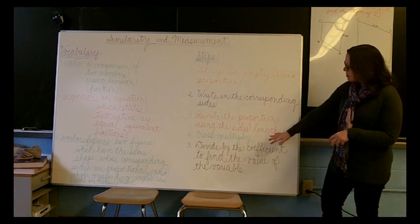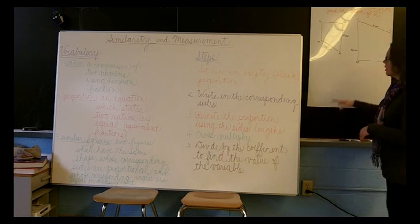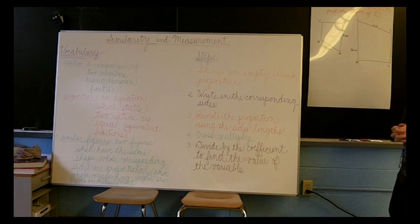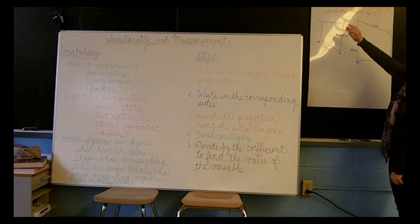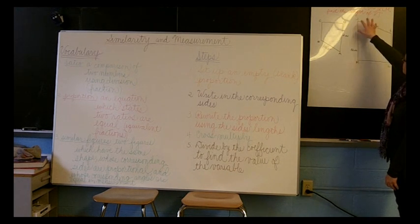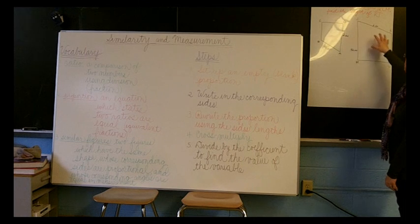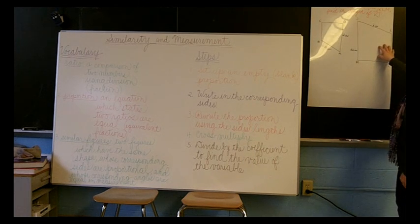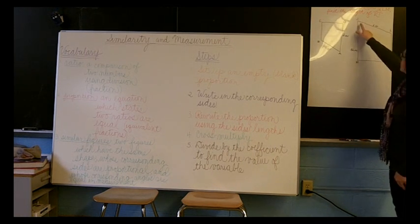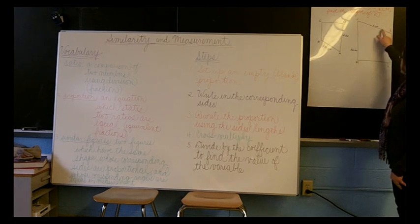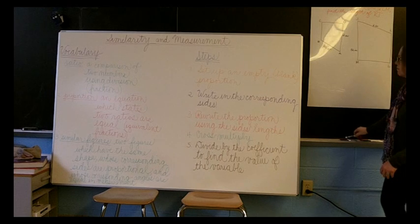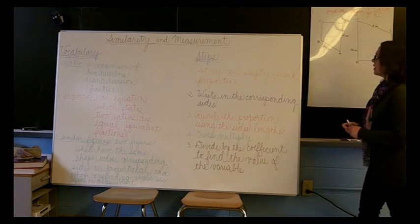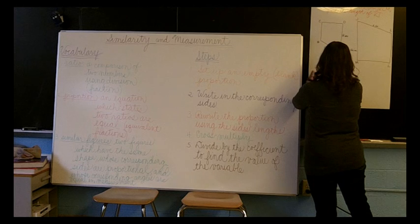And we have some steps that we're going to follow while we work out three different problems. So let's look at our first example. Just in case you can't read it, it says, given that figure ABCD is similar to figure JKLM, we need to find the length of side KJ. So the first thing we need to do, as our first step says, is set up an empty or blank proportion.